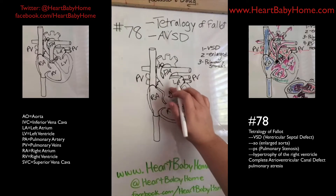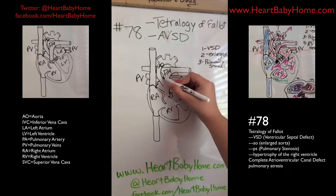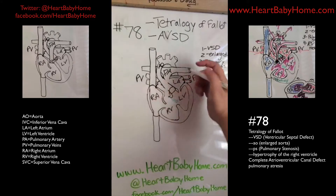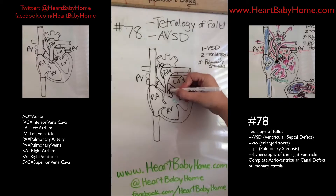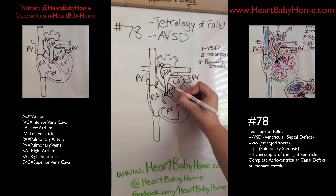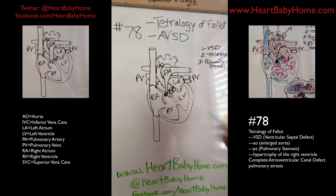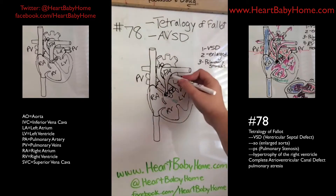Our aorta is a bit bigger. Stenosis means smaller — we'll do the valve in a minute — and they still have all three leaflets. So our aorta is enlarged and our pulmonary artery has stenosis.